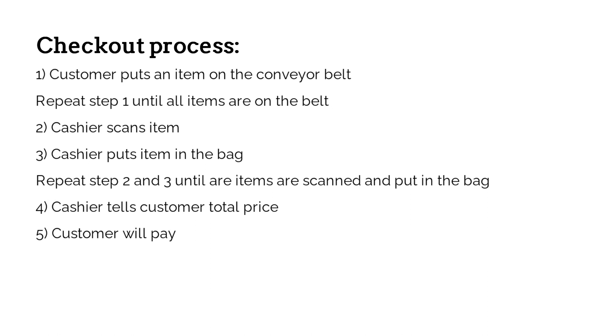In this situation, the best case scenario would be that the customer only wants to buy one item. The customer would put the item on the conveyor belt, which is one step. The cashier will scan the item and then put it in a bag, so now we have three steps. Then the cashier will tell the customer what the total price is. That's four steps and eventually the customer will pay. So now we have a total number of steps of five.